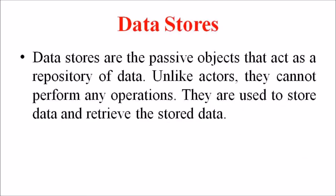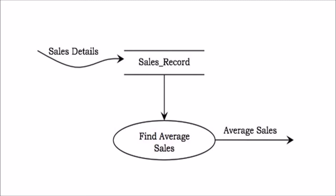The next term is the data store. A data store is a passive object that acts as a repository of data. Unlike actors, data stores cannot perform any operation. They are used to store and retrieve data, and they represent a data structure, a disk file, or a table in the database. In the DFD, a data store is represented by two parallel lines containing the name of the data store. Each data store is connected to at least one process. An input arrow contains information to modify the content of the data store, while an output arrow contains information retrieved from it. When part of the information is to be retrieved, the output arrow is labeled; an unlabeled arrow denotes full data retrieval. A two-way arrow implies both retrieval and update operations.